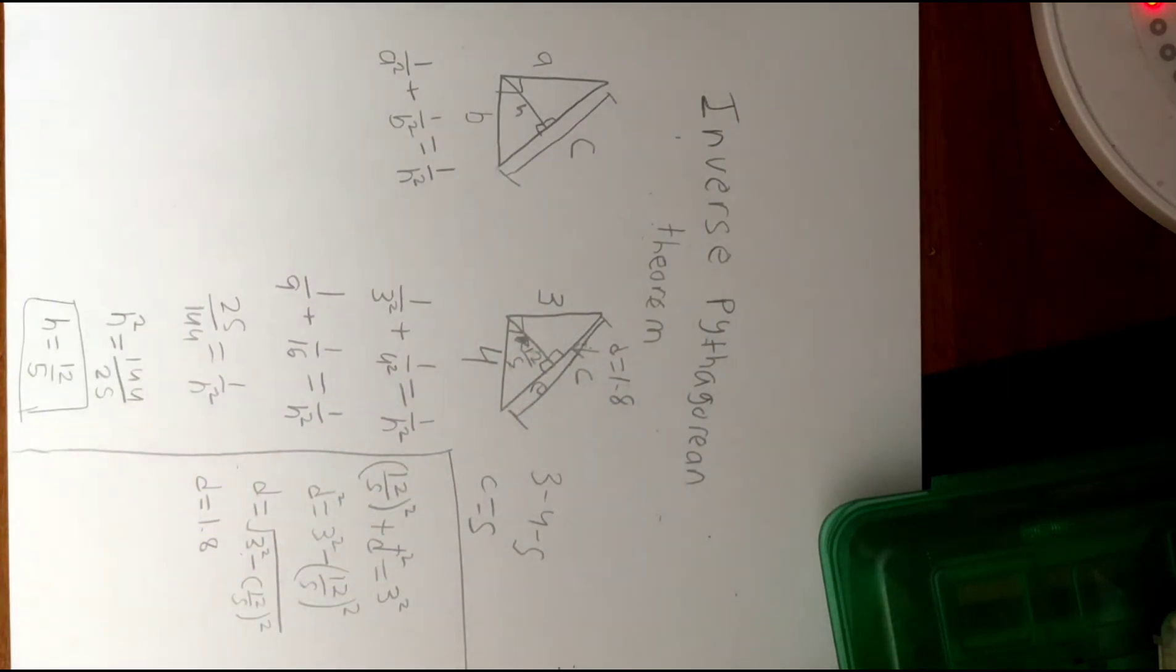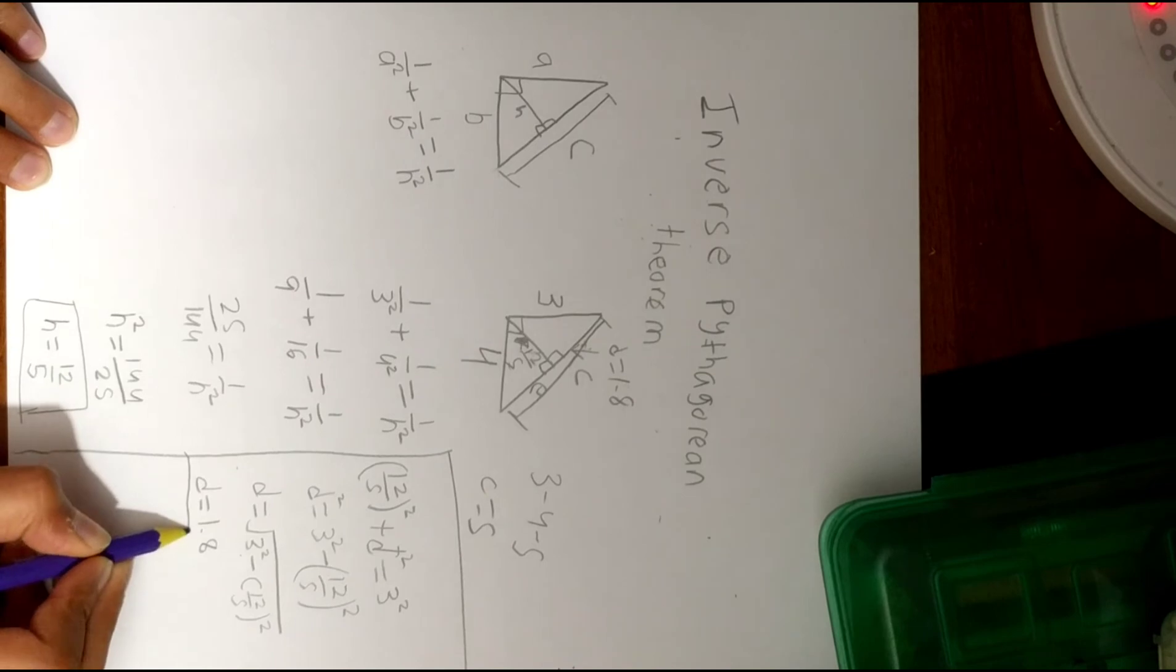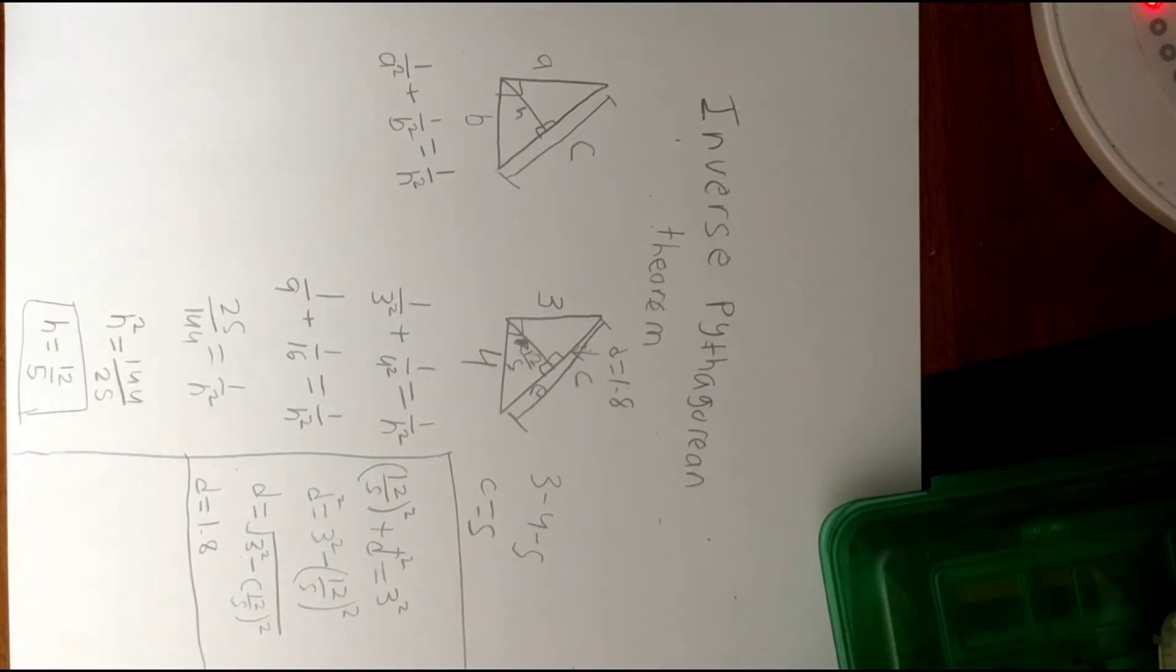And we can replace this as 1.8. Now if we do the same thing for e to prove that this theorem works, we should get a value of 3.2 because 3.2 plus 1.8 will equal 5. Let's see if we get 3.2 for the value of e.